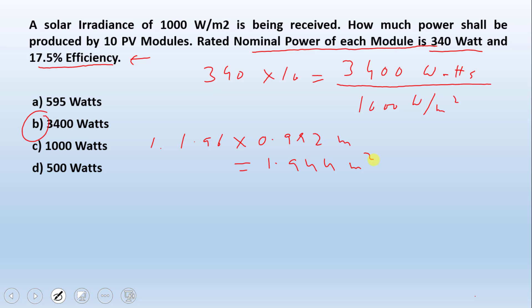Now the irradiance being received is 1000 watts per meter square. So how much will this area receive? We will multiply this with 1000. So this will give us 1.944 watts of solar energy being received.